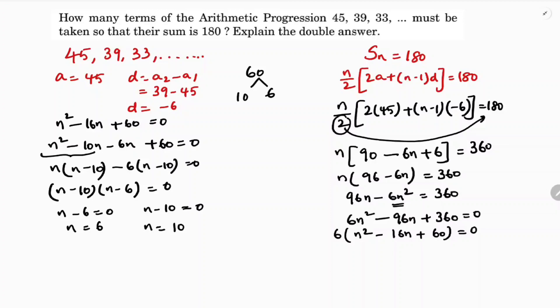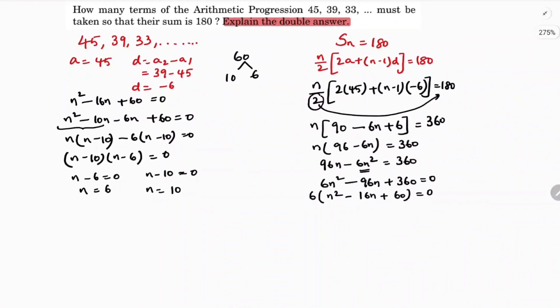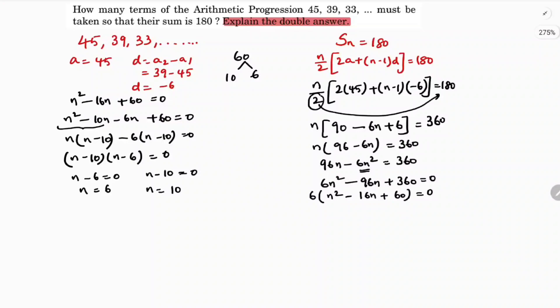See, both the values for n are positive. That's why in the question they ask explain the double answer, because both the values for n are positive. Which one should we take? We can take both. Now see here n is 6, so find S6 and S10.